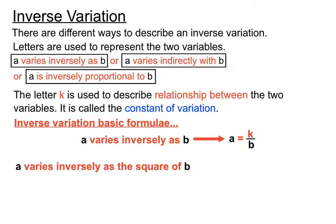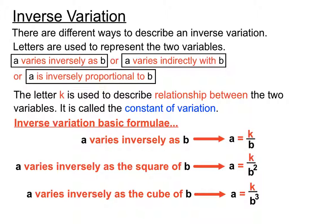We can have the square of B or the cube of B and we need to adjust there. The k is always on top and the B or B squared or B cubed is on the bottom. That's how we set up the question for inverse variation questions.